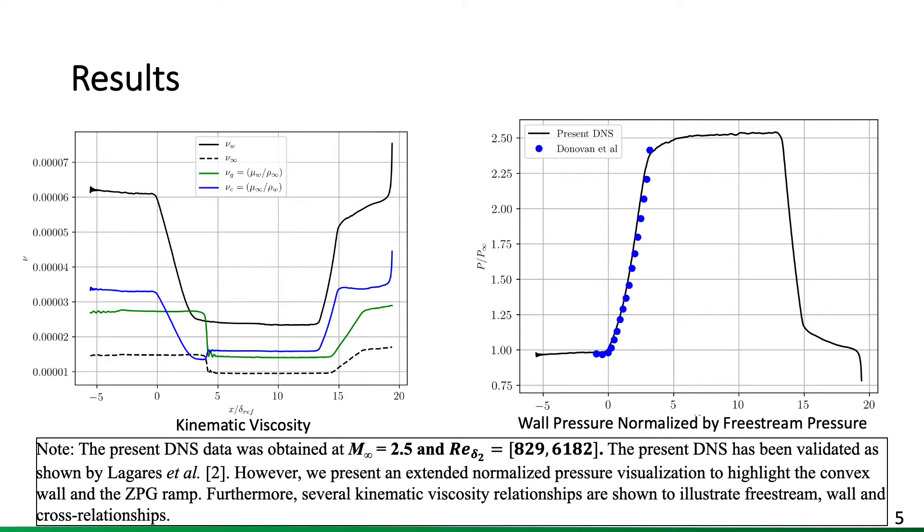You see the pressure increases by nearly 2.5 times from the incoming conditions throughout the concave portion. And then there's a nearly zero-pressure region, such as the incoming inlet throughout the ramp, followed by a precipitous drop at the convex portion of the domain, which is the main interest of the present study.